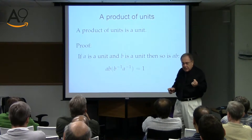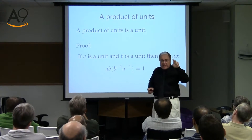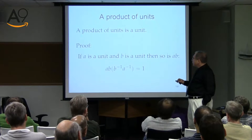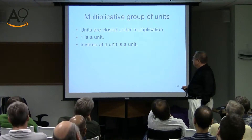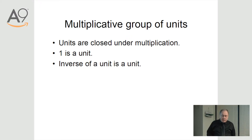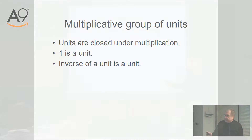Units are closed under multiplication, one is a unit, and the inverse of a unit is a unit — that gives you the multiplicative group of units inside every commutative ring.